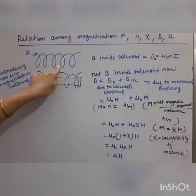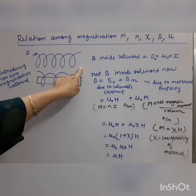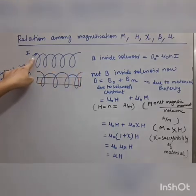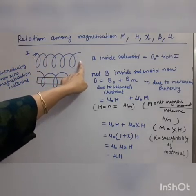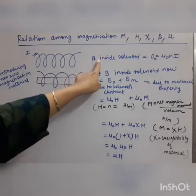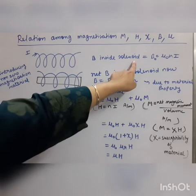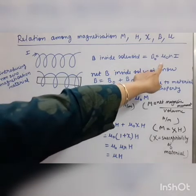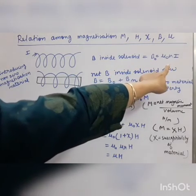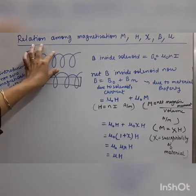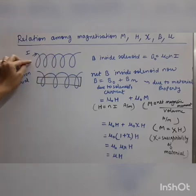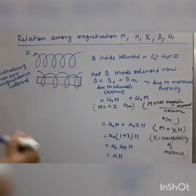Let us take a device — you already know the name of this device, this is a solenoid. Suppose if we pass a current in the solenoid, then inside the interior of the solenoid a magnetic field B will be produced. We have already derived its formula: B = μ₀Ni. So when a solenoid is air-cored, meaning air is filled in the windings, then the magnetic field produced is μ₀Ni, which we call B₀.